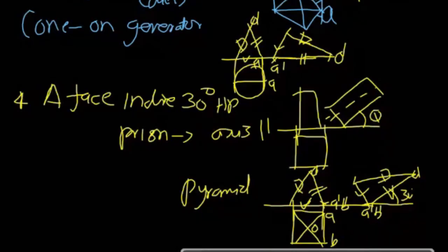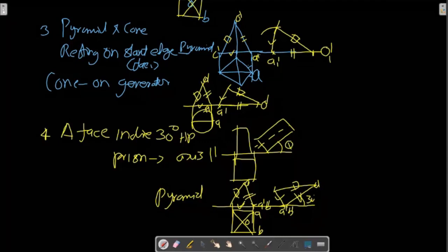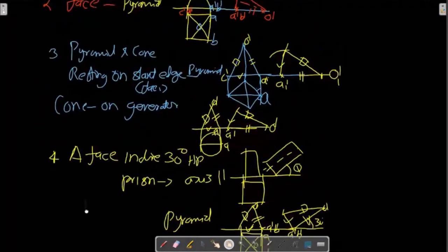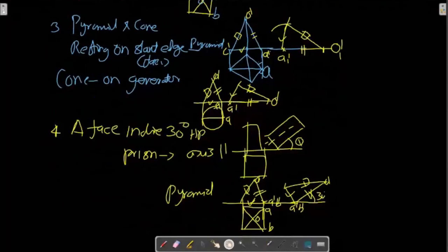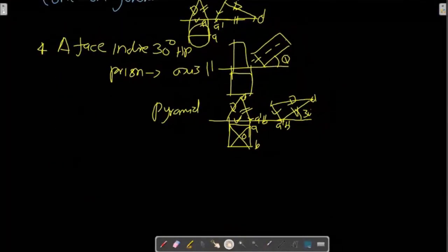This is the same type — facing. Therefore, the corner is the same. The slant edge in English — this is the slant edge, or the slant edge is the generator. This is the corner — the corner is the same. Resting on the corner. There are many problems.